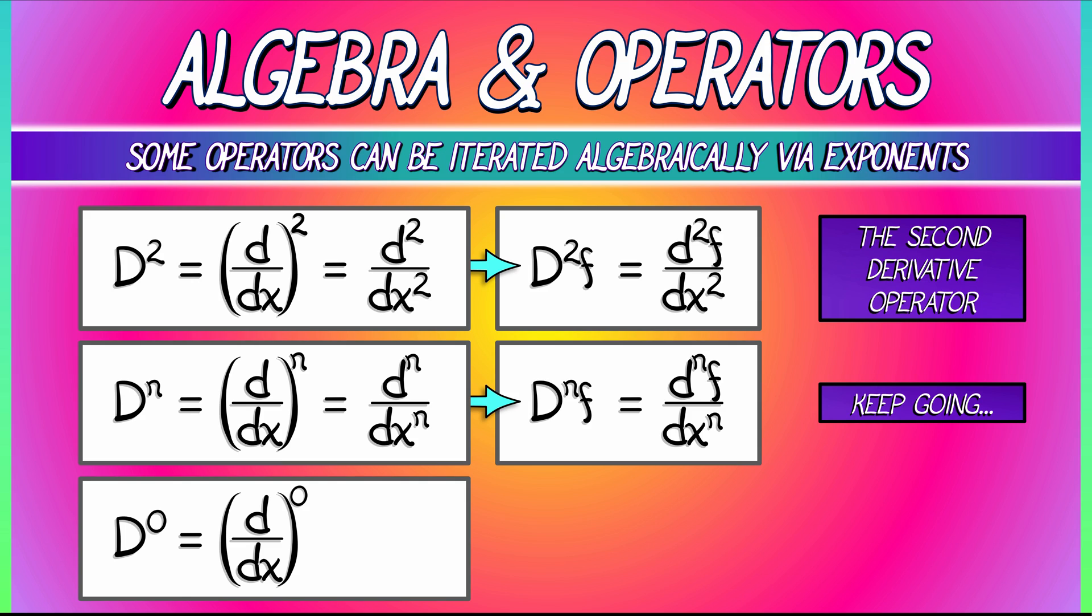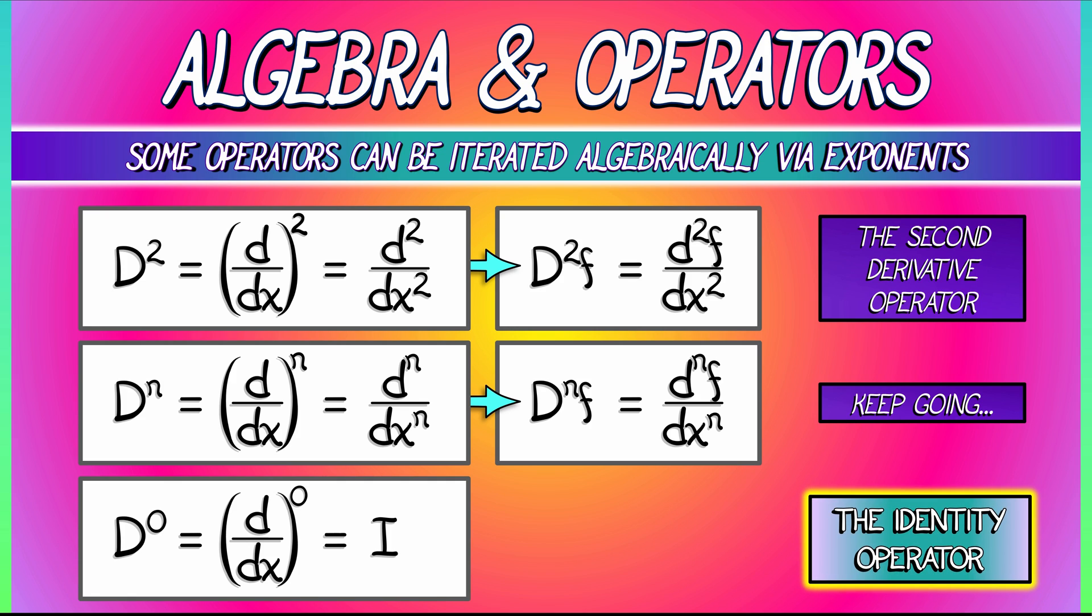It does nothing. And we're going to give it a special name. This operator, d to the zero, is capital I, the identity operator. Why is it called that? It's called that because it does nothing. It returns the same function. Capital I applied to a function f gives precisely f.